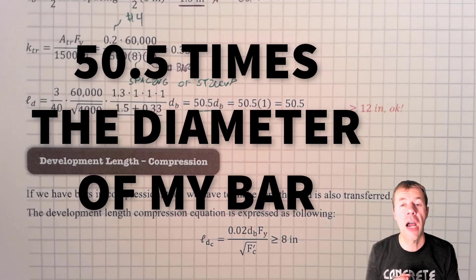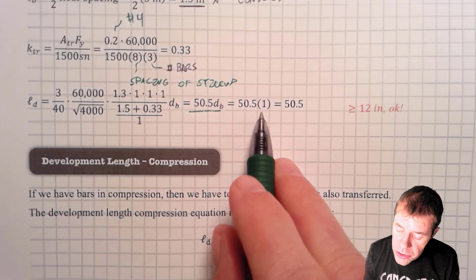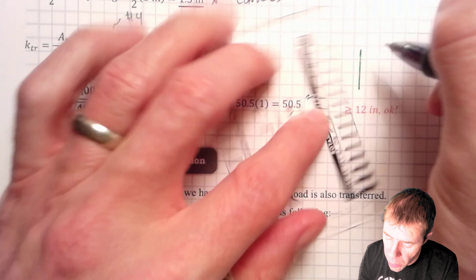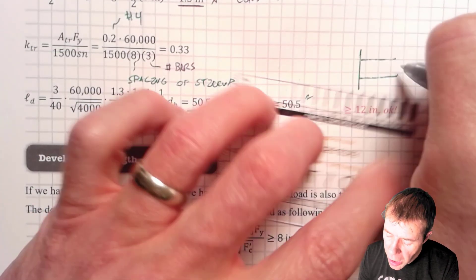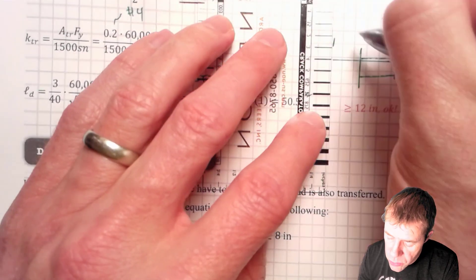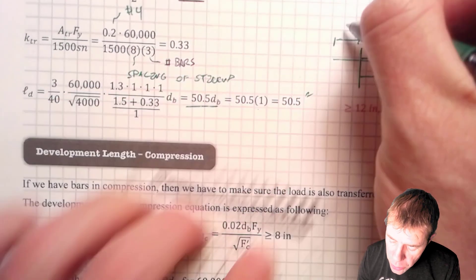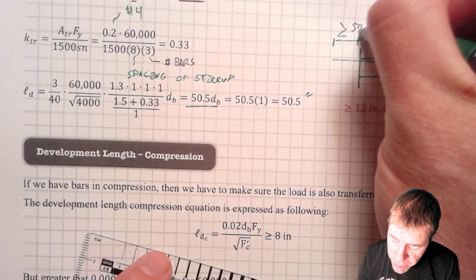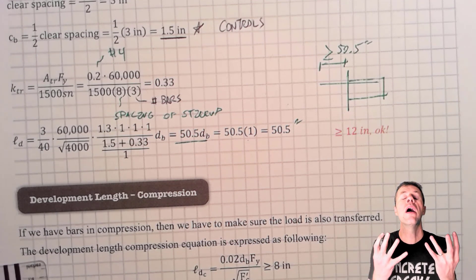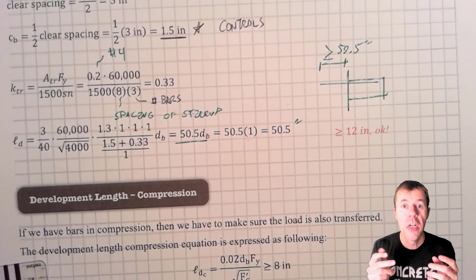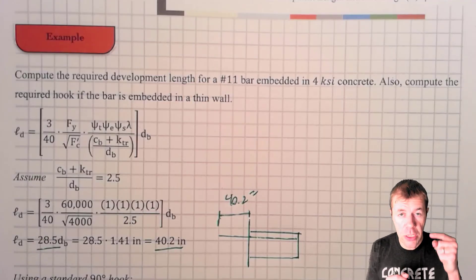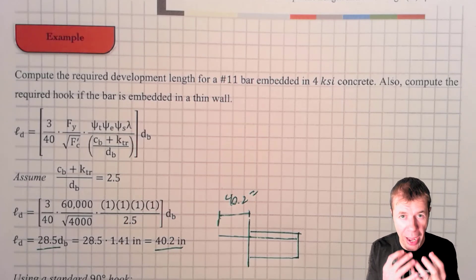The result is 50.5 times the bar diameter. My number 8 bar has a diameter of 1 inch, so the required embedment length is 50.5 inches — meaning the steel must extend at least 50.5 inches into the wall. You might say that seems huge. Well, if you don't have the room, you go to the hook. So I'm going to work another example: first a straight bar, then I'll show you how to calculate a hooked bar.